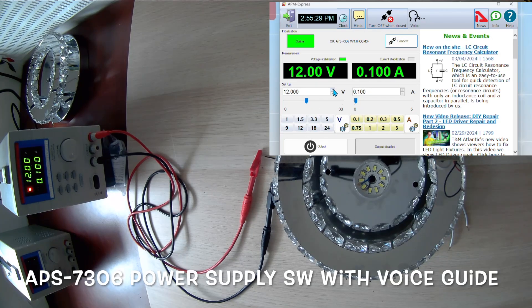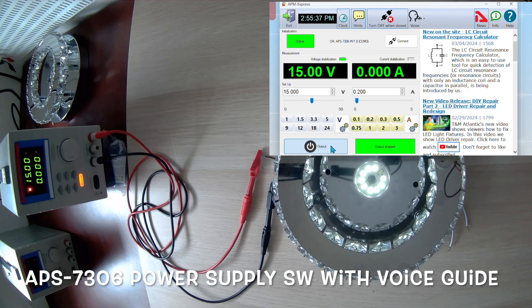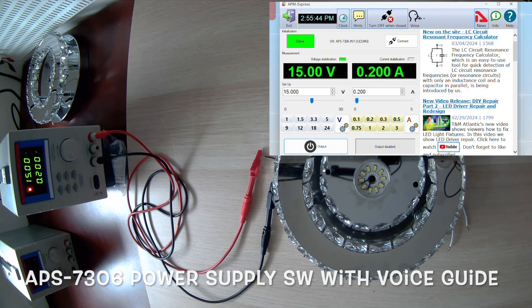We connect the small section to the power supply, set 15 volts or a little more and connect the output to the small LED section. And we see, the small LED section is flickering. Output enabled. Now, it is clear that the small LED section is broken.